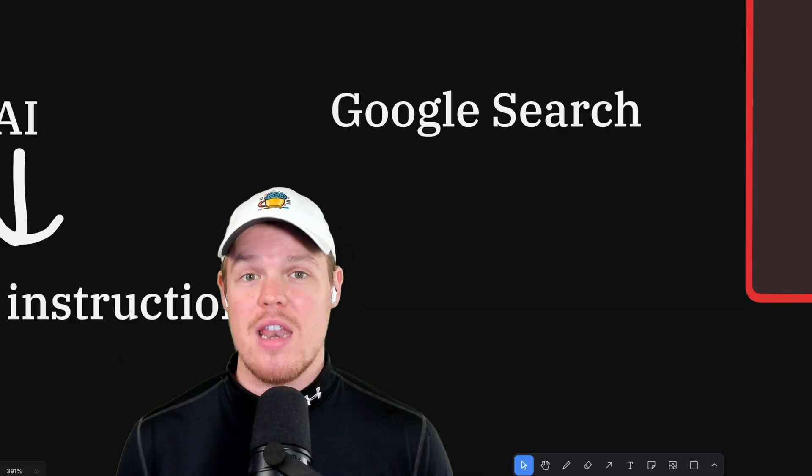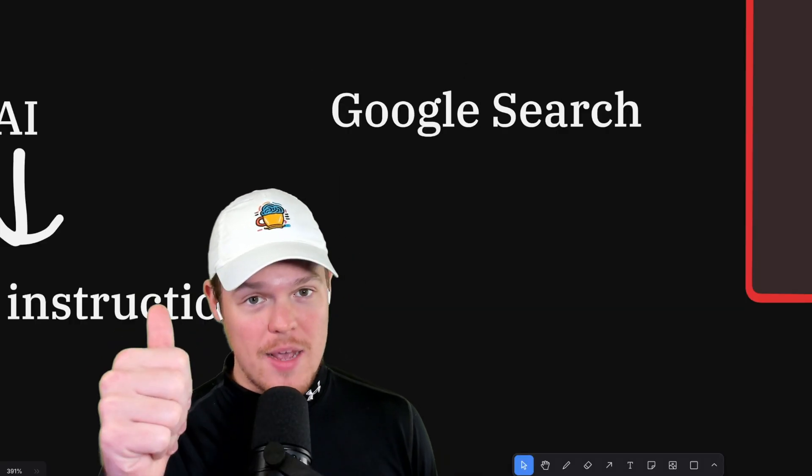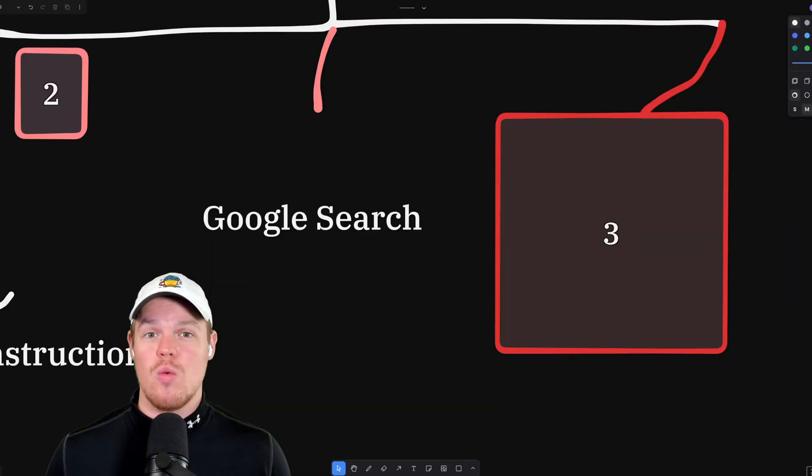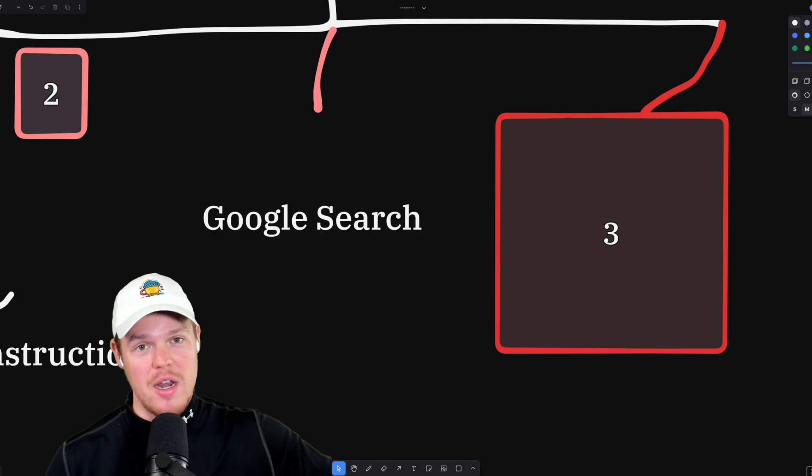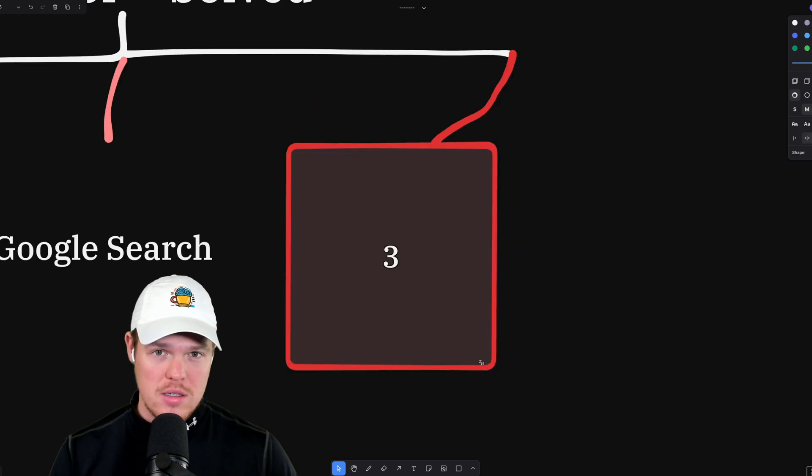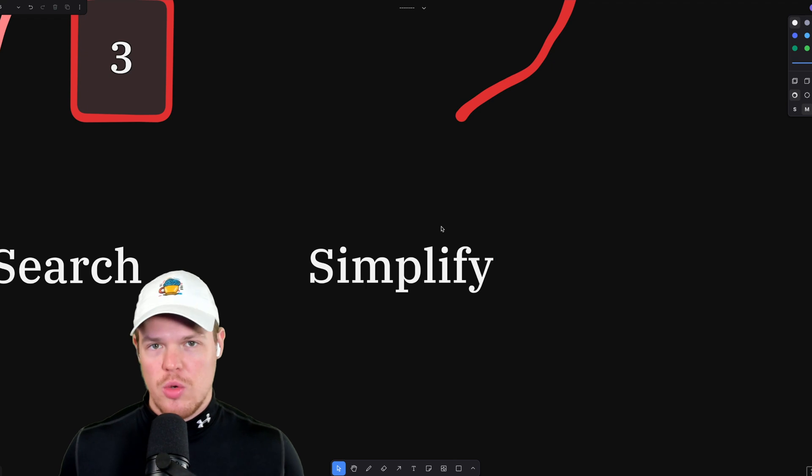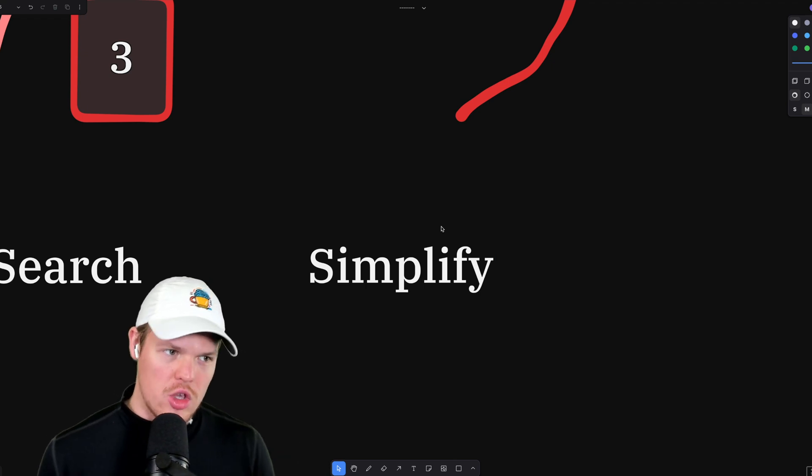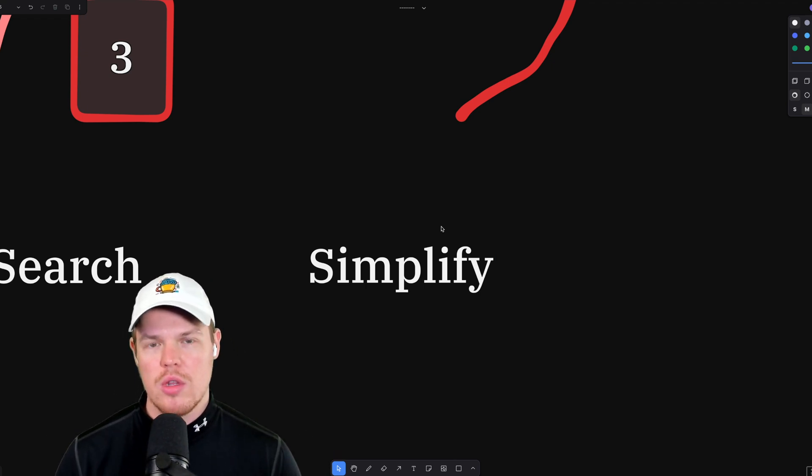So let's say none of that works. We did step one. We did step two. We're still running into errors. We're just lost. Here is nuclear button. We got to get this working. That is simplify. Here's the situation of simplify. And this was a go-to for me, especially in the early days of development. Simplify, simplify, simplify.